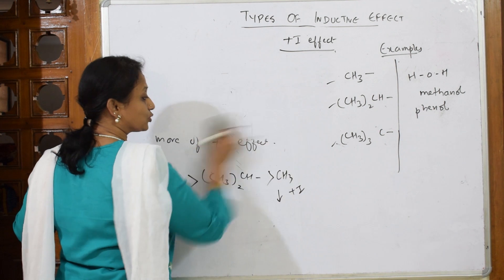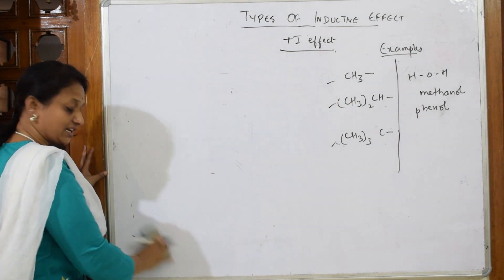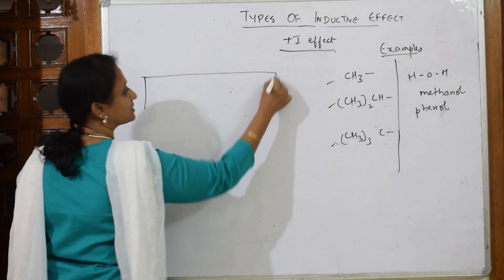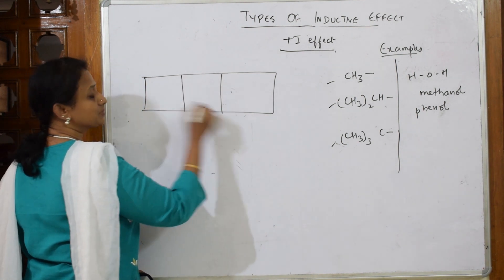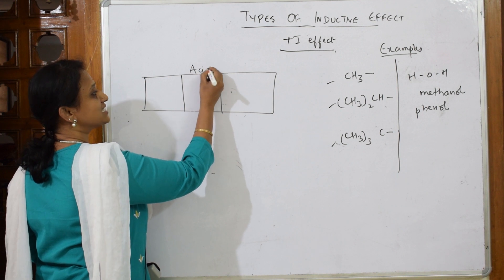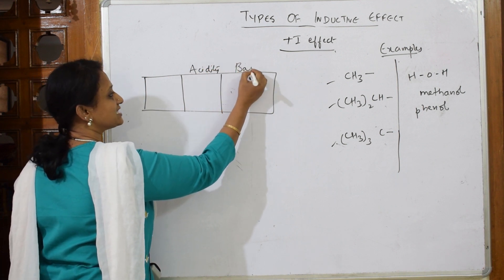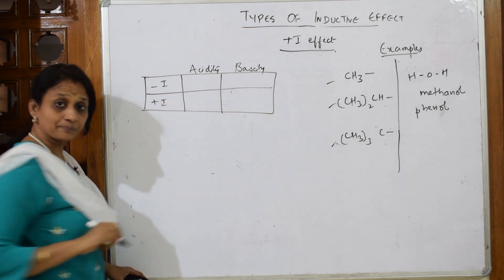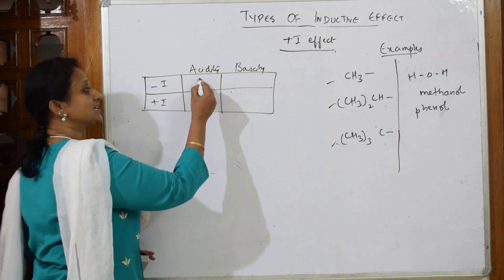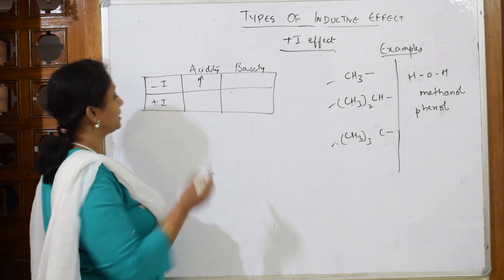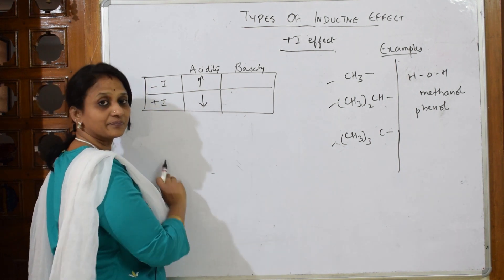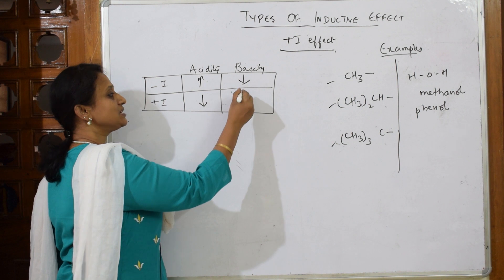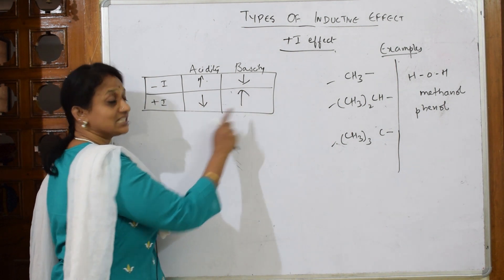Remember: when comparing acidic and basic nature, always connect -I effect and +I effect. Let me draw a table with two columns — acidity and basicity. For -I effect: acidic nature increases, so basic nature decreases. For +I effect: acidic nature decreases, so basic nature increases. So +I effect means basic nature increases.